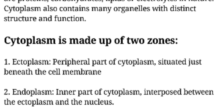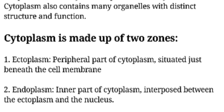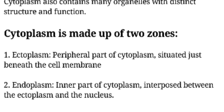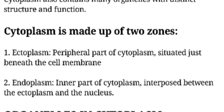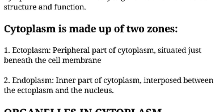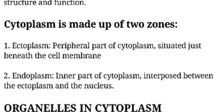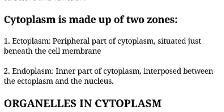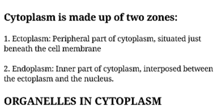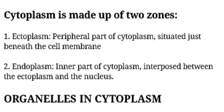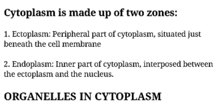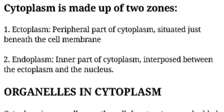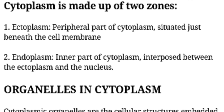Cytoplasm is made up of two zones. 1. Ectoplasm — the peripheral part of cytoplasm, situated just beneath the cell membrane. 2. Endoplasm — the inner part of cytoplasm, interposed between the ectoplasm and the nucleus.